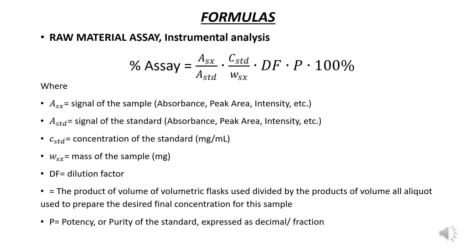For the assay of raw material using instrumental analysis, the assay is as follows. The assay is equal to the signal of the sample multiplied by the concentration of the standard, multiplied by the dilution factor, multiplied by the potency of the standard, times 100%. The product is divided by the signal from the standard times the weight of the sample.